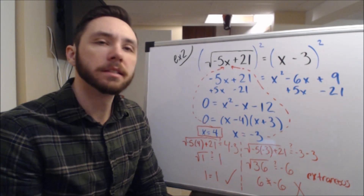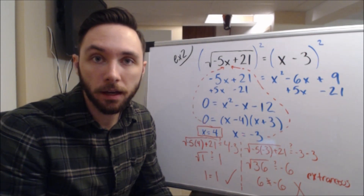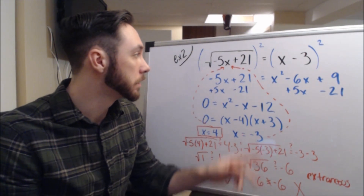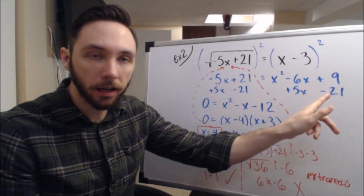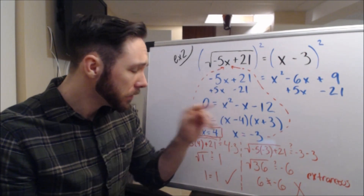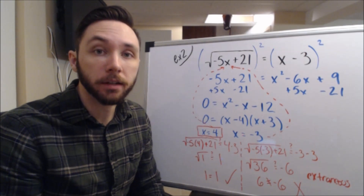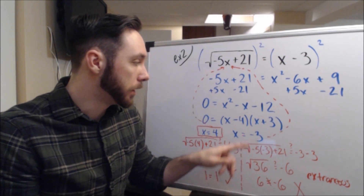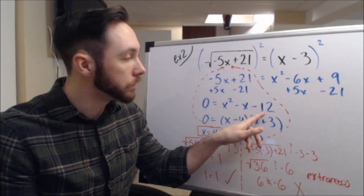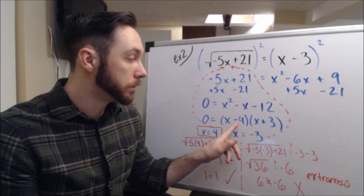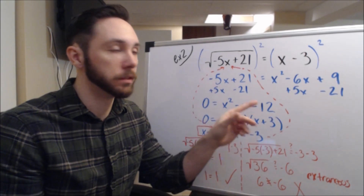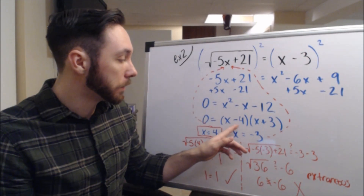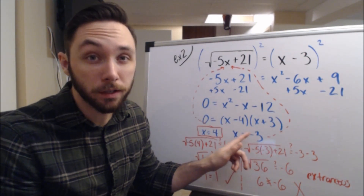Now I have a quadratic in play. I want to set this equal to 0, because the idea behind solving quadratics is you can set it equal to 0 and see if you can factor, use quadratic formula — whatever your preference is. So I'm going to move over that negative 5x and that negative 21. I have 0 equals x squared minus x minus 12. It turns out you can actually solve this by factoring, which is a lot quicker than quadratic formula. I found two factors of negative 12 that add to negative 1 — they are negative 4 and 3. Negative 4 times 3 is negative 12, and negative 4 plus 3 is negative 1. Using the zero product property, I get solutions of x equals 4 and x equals negative 3.